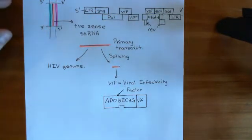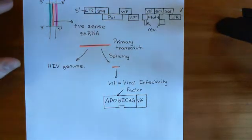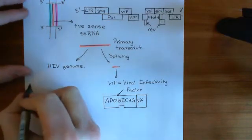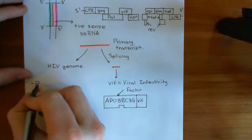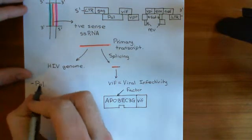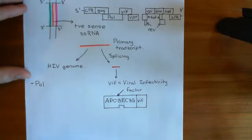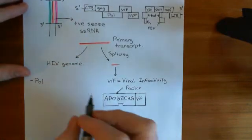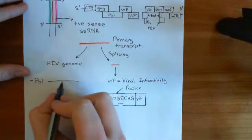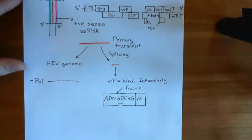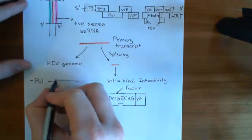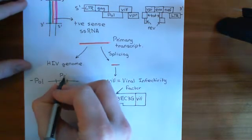Now let's turn our attention to how you actually produce those three important enzymes that you need within the nucleocapsid — reverse transcriptase, integrase, and protease. You use the POL gene, and what will happen is the POL gene will be translated as one great big polyprotein, which contains the polypeptides that will make the reverse transcriptase, the integrase, and the protease enzymes, and what you'll do is you'll then cut the polyprotein up.